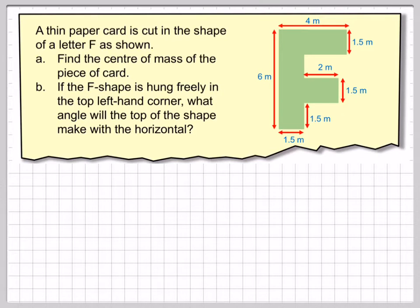In this video I'm going to show you how to find the center of mass of a two-dimensional shape. A thin paper card is cut in the shape of a letter F, so here we have a letter F. Find the center of mass of the piece of card, and part B which we'll look at later, if the F shape is hung freely in the top left-hand corner, which is that one there, what angle will the top of the shape make with the horizontal?